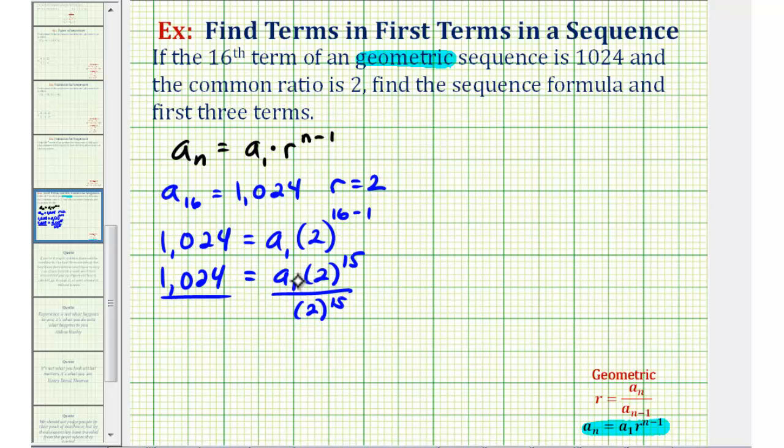When we do this, we'll get the first term, but we'll also have enough information to write our sequence formula. This would simplify to one. So we have a sub one equals this quotient here. Let's go ahead and use our calculator.